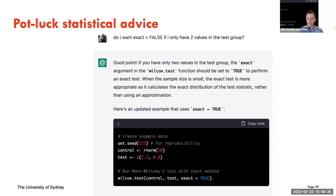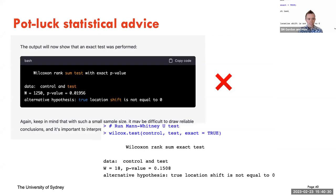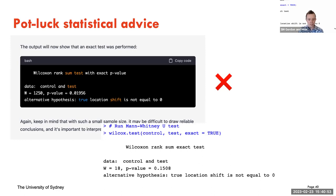Always take it with a grain of salt and always check. When you run the code in R, you get the actual correct answer rather than its made-up numbers. So always take it with a grain of salt and always check.